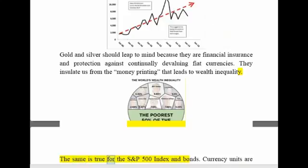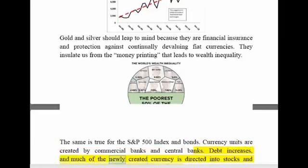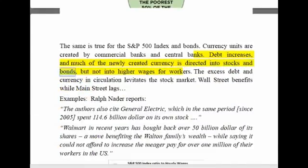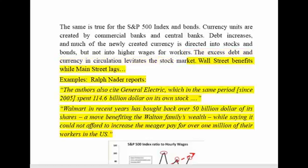The same is true for the S&P 500 index and bonds. Currency units are created by commercial banks and central banks. Debt increases, and much of the newly created currency is directed into stocks and bonds, but not into higher wages for workers. The excess debt and currency in circulation levitates the stock market. Wall Street benefits while Main Street lags.